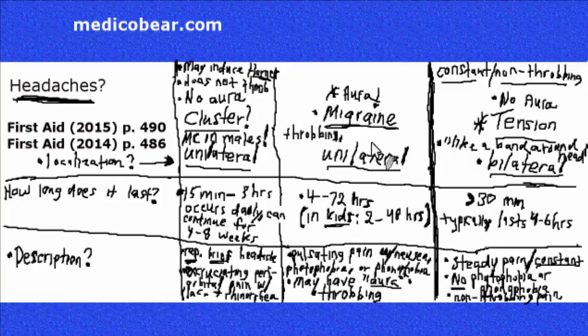The migraine headache is throbbing and pulsating. You're not seeing that throbbing or pulsating sensations with the cluster or the tension. Now with the nausea seen with migraine, that nauseousness in the patient, you can see vomiting in the clinical vignette. And when you see that, you definitely should be thinking of the migraine.